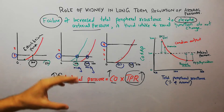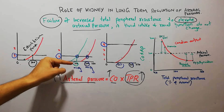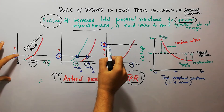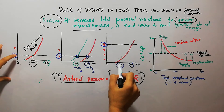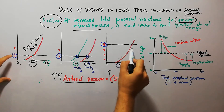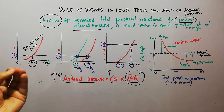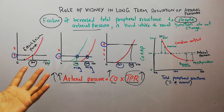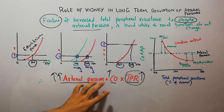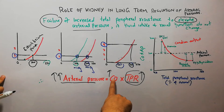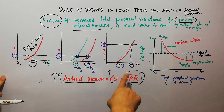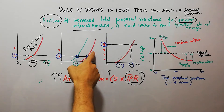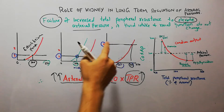Any pathology that decreases kidney function will decrease renal output and increase arterial pressure from 100 mmHg. Similarly, if intake of salt and water is increased 3 to 4 times, this will again shift the arterial pressure from 100 to around 200 mmHg. So the determinants of arterial pressure are renal function and intake of salt and water. Whenever cardiac output or total peripheral resistance increases, there should be an increase in arterial pressure.